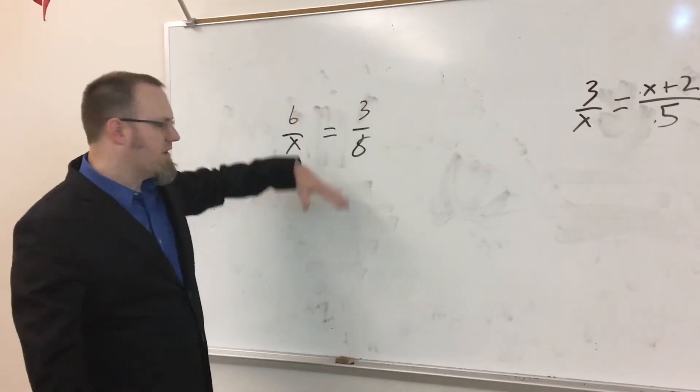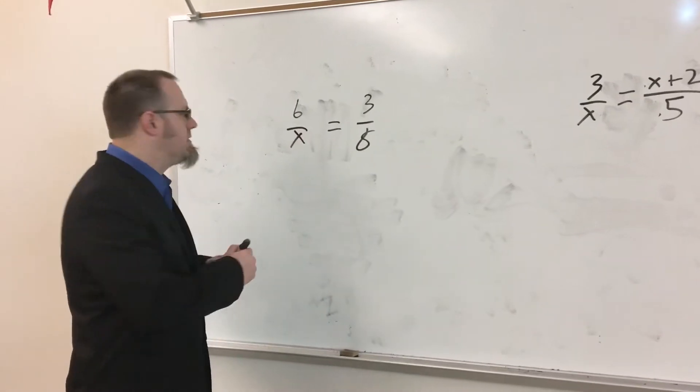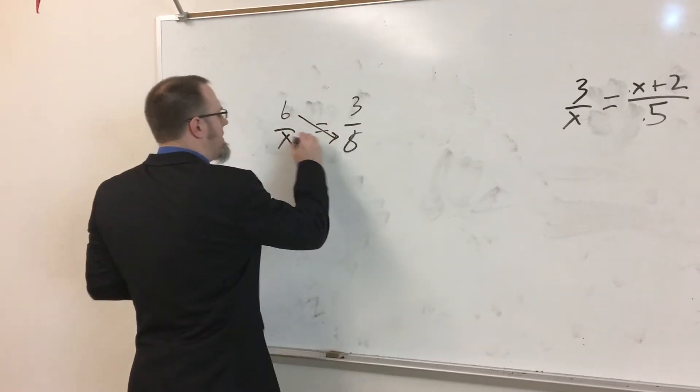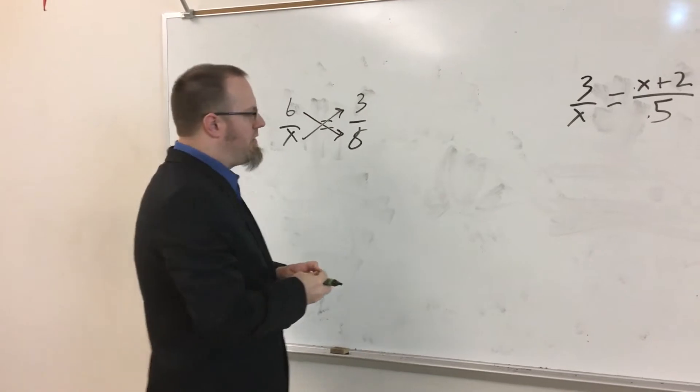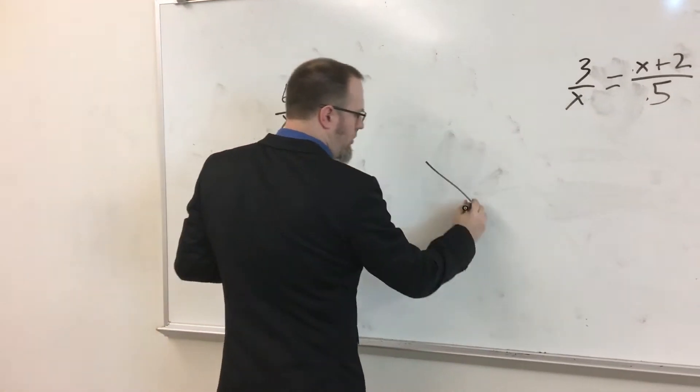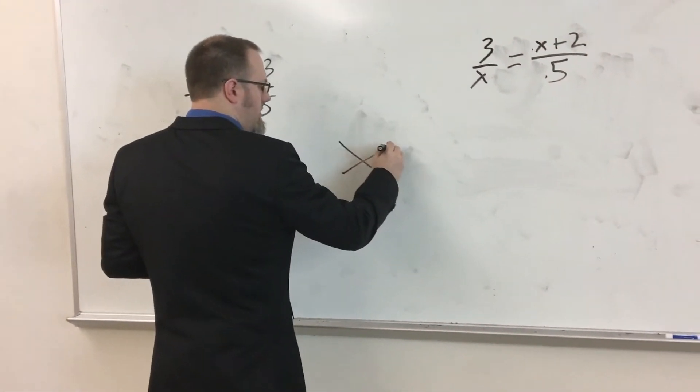To start with, when you have ones like this, they're just basic fractions that are equal to each other. To solve fractions that are equal to each other, you cross multiply. Now, I always thought of cross multiply as kind of like a symbol. We have the arrows that go top to bottom, kind of like this, and bottom to top.